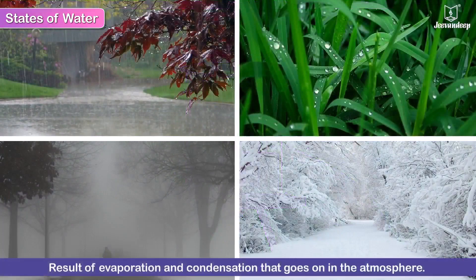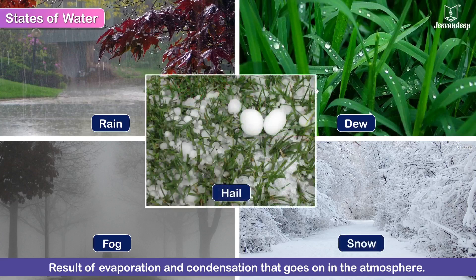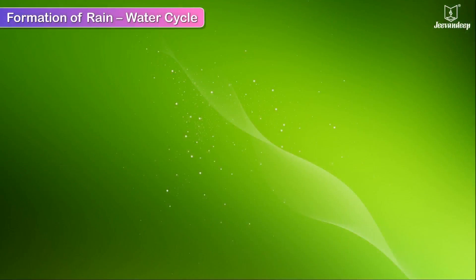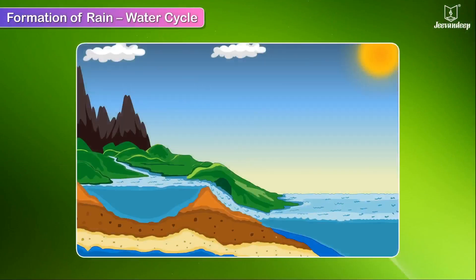Other forms of water such as rain, dew, fog, snow, and hail are the result of evaporation and condensation that goes on in the atmosphere. Water cycle: water in the oceans, seas, rivers, and lakes gets heated by the Sun and evaporates, forming water vapor.